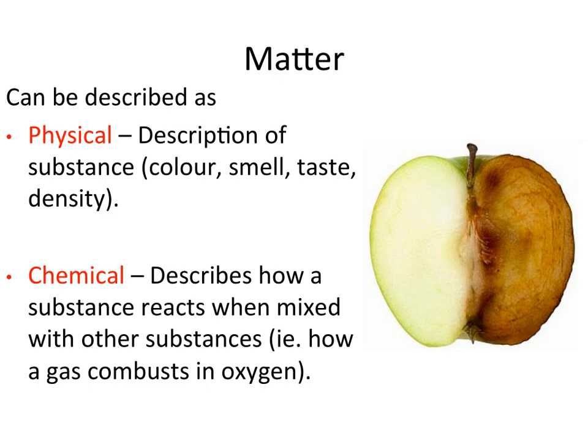Physical is something that you use your senses to describe, so color, smell, taste, or we use measurements — an example being density. Chemical is describing how a substance actually reacts with another substance, such as how it reacts in oxygen or how gasoline can combust in oxygen.